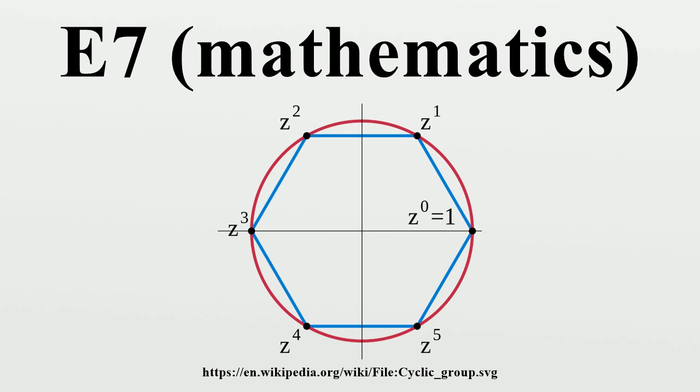The Tits-Koecher construction produces forms of the E7 Lie algebra from Albert algebras, 27-dimensional exceptional Jordan algebras.